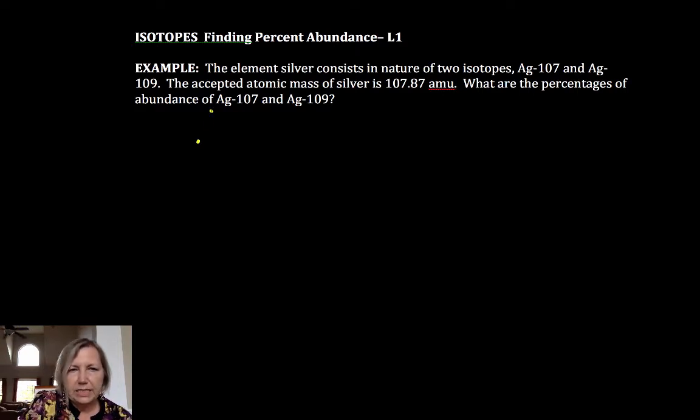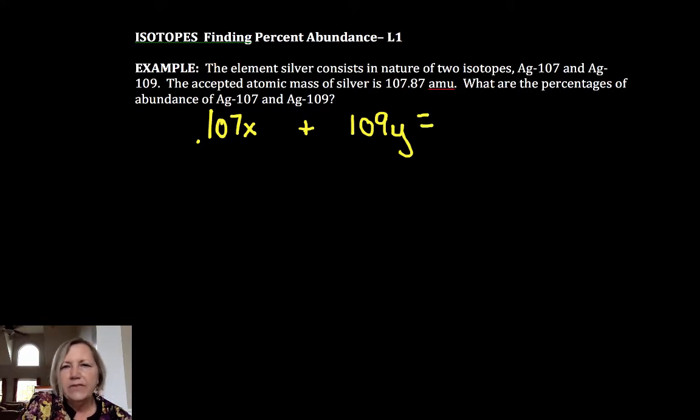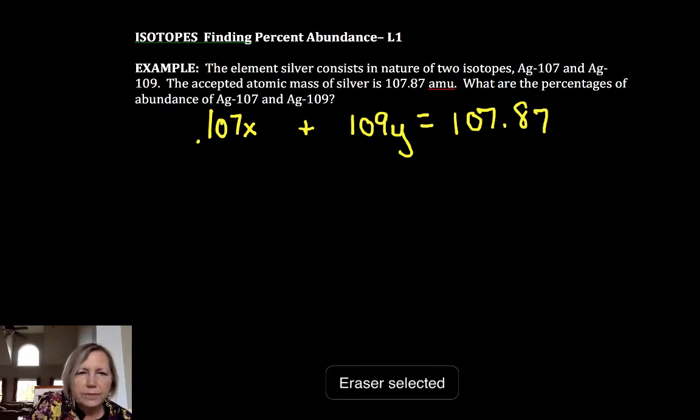We don't know the percent abundance of silver 107, so I'm going to call that x. I don't know its fractional or percent abundance. And I don't know 109 and it's not likely the same, so we're going to call that y. And I am given the atomic mass that would be put on the periodic table, 107.87 atomic mass units. So what I would do, let me get that stray little dot out of the way here so it doesn't look like a decimal point.